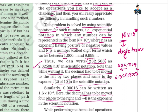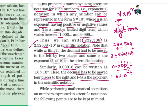For 0.00016, the decimal is moved to the right — 1, 2, 3, 4 places — giving 1.6 × 10^(−4). The rule is: if the decimal moves from left to right, the power is negative; if from right to left, the power is positive.